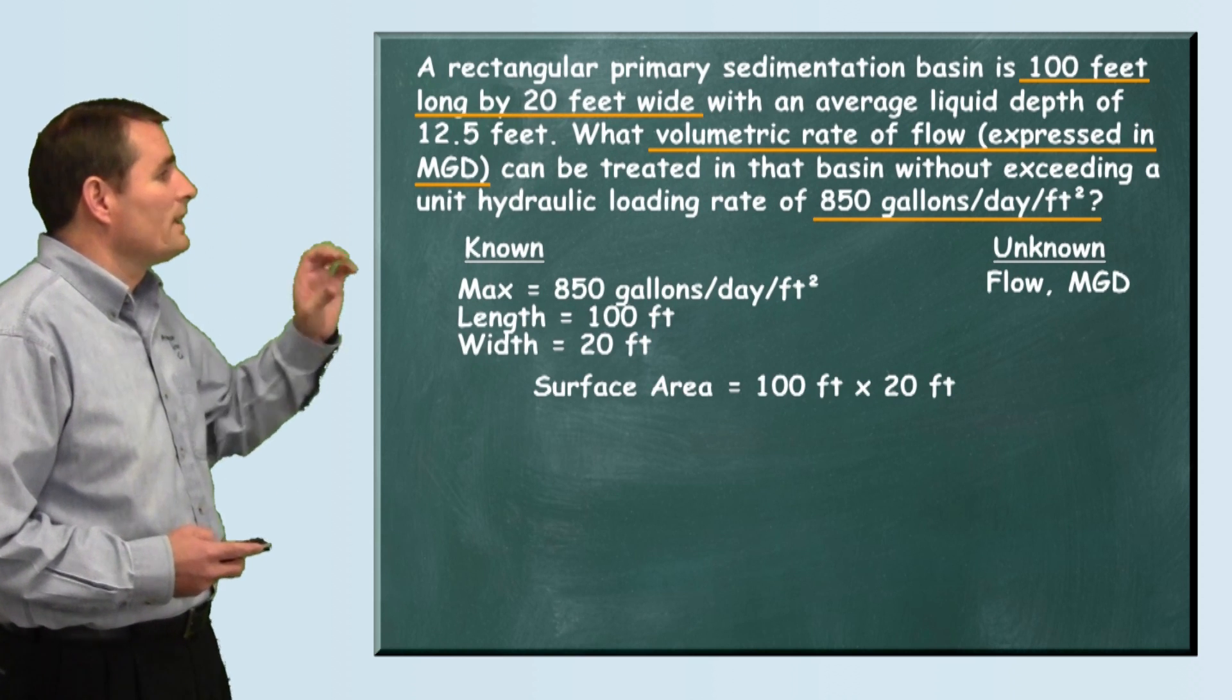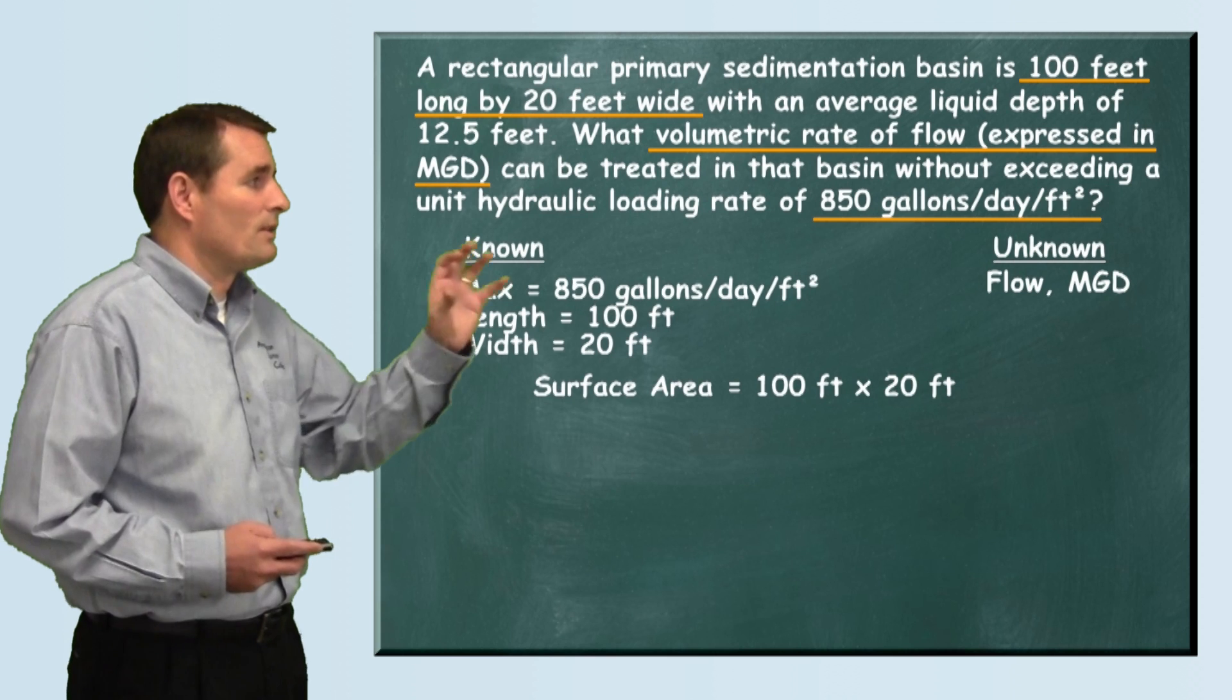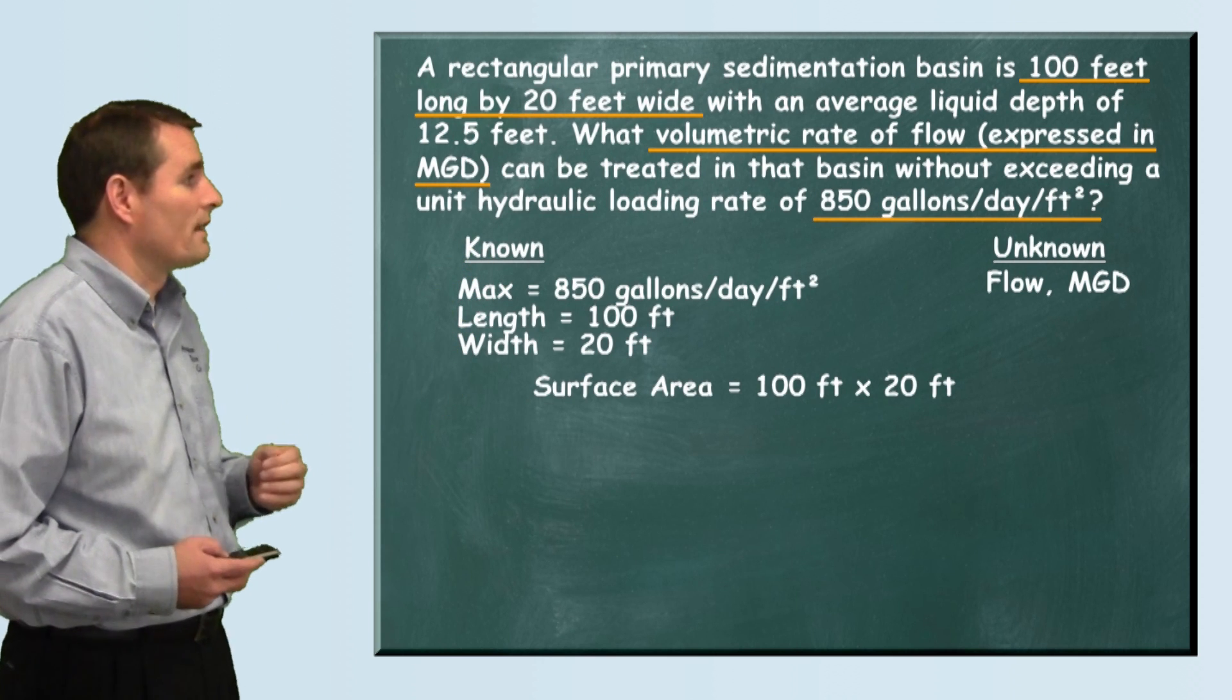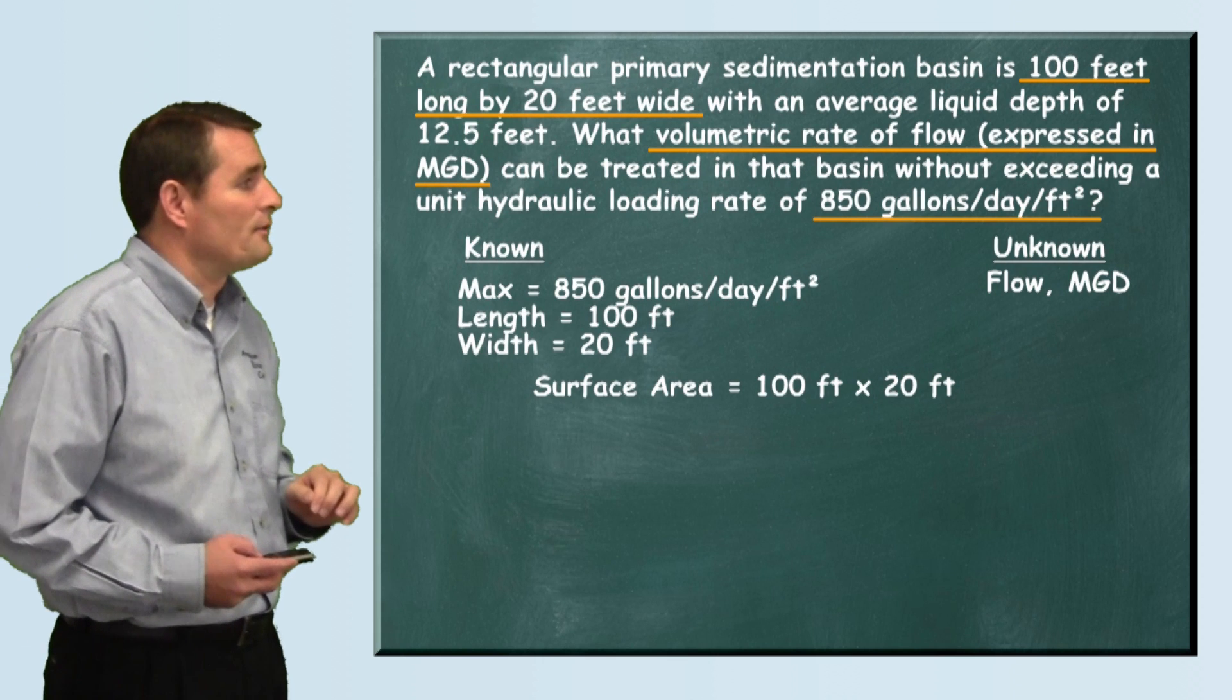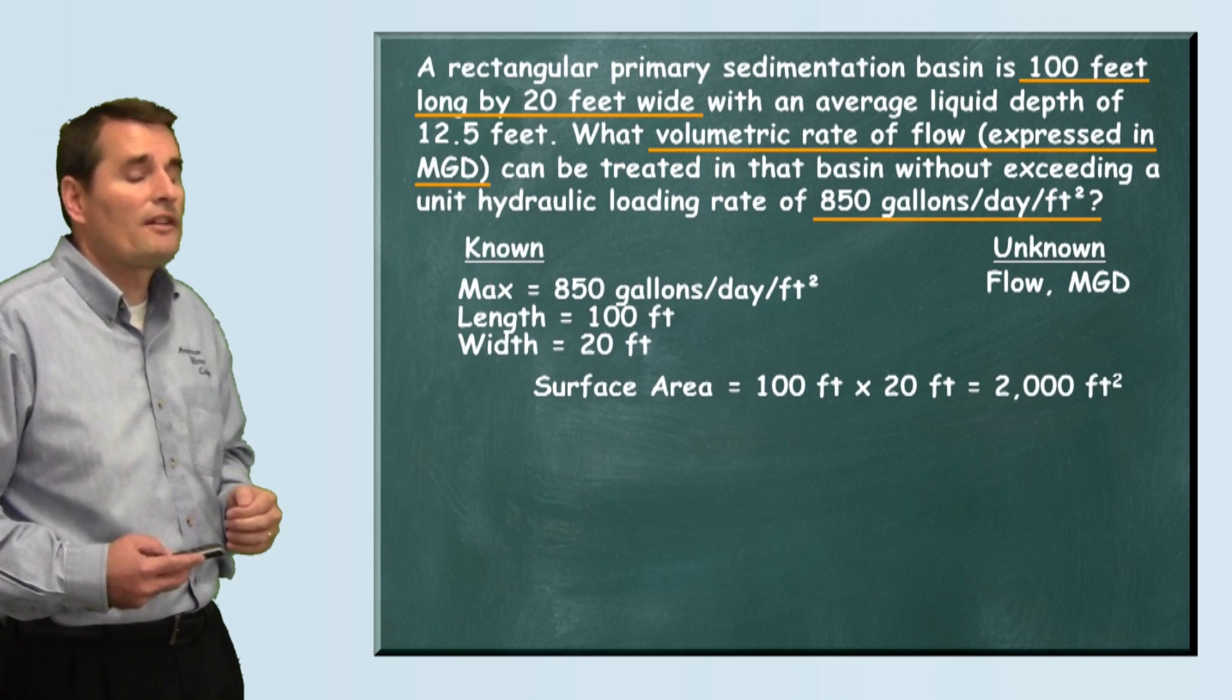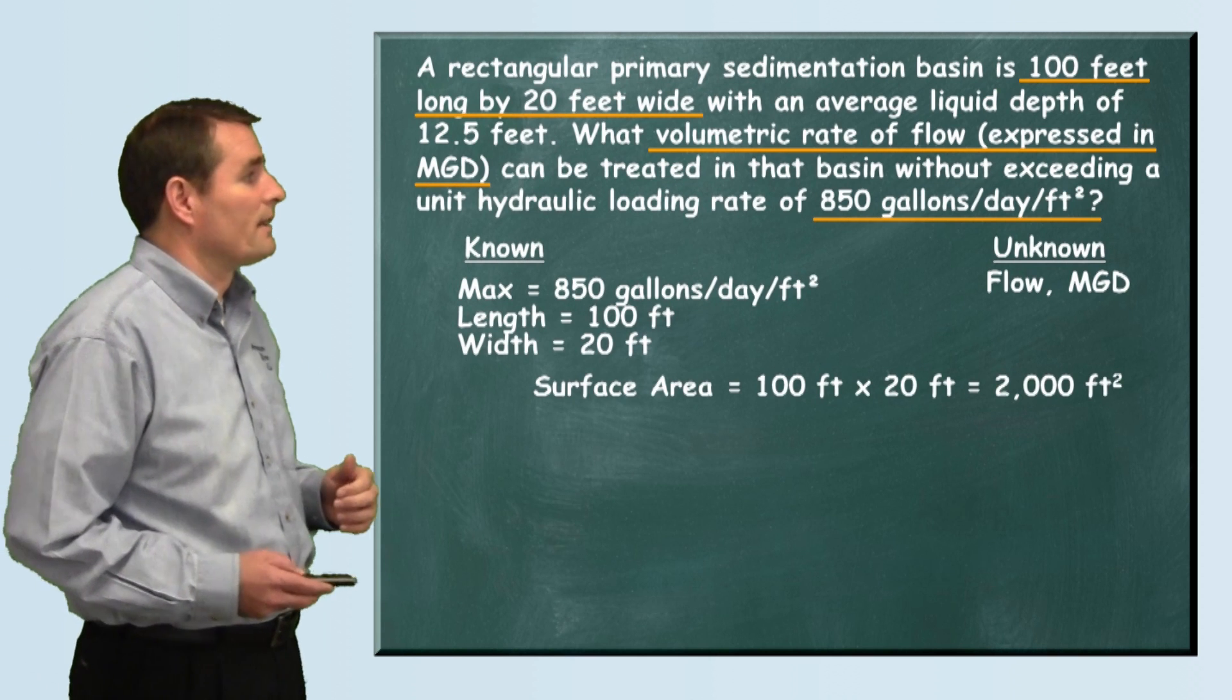We're not really concerned with the depth; we just need to calculate our surface area. That's just length times width. So when we multiply 100 feet times 20 feet, we get 2,000 square feet of surface area.